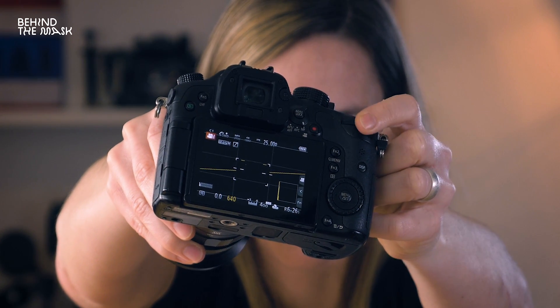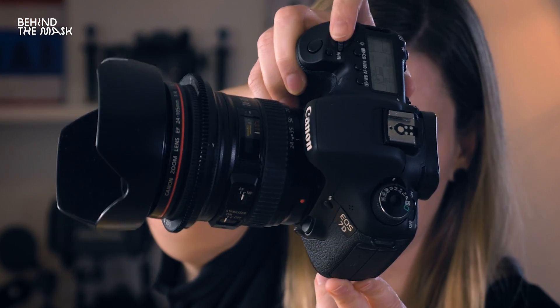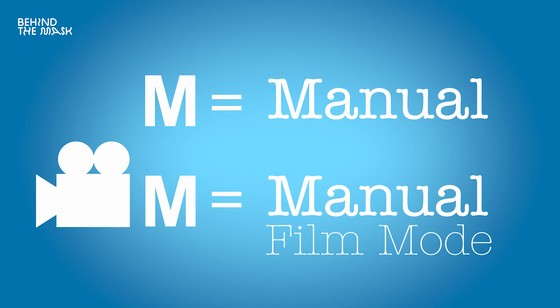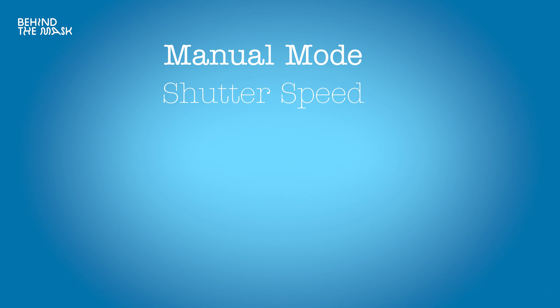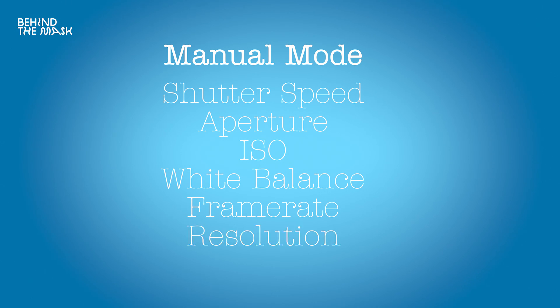If you can't change the shutter speed on your camera with a dedicated dial, just search online how to change the shutter speed for your specific camera model. Either way, I would recommend setting the camera to M — full manual or full manual film mode. In manual mode you can set all your settings accordingly: your shutter speed, your aperture, your ISO, your white balance, your frame rate, and everything else.